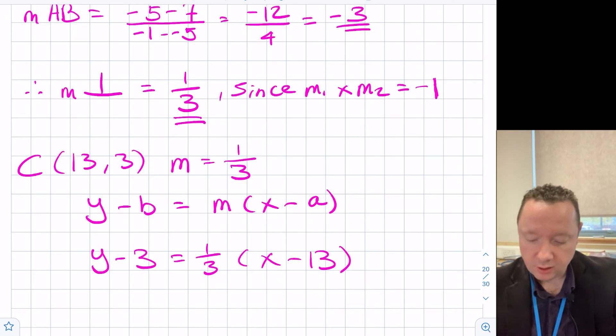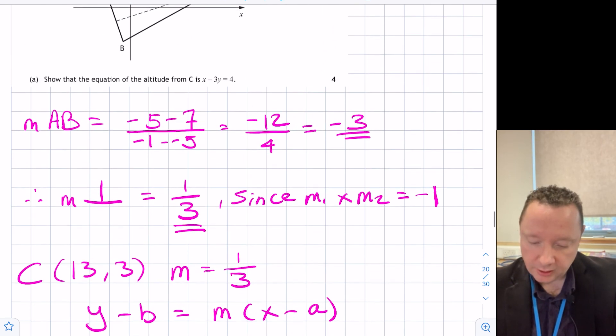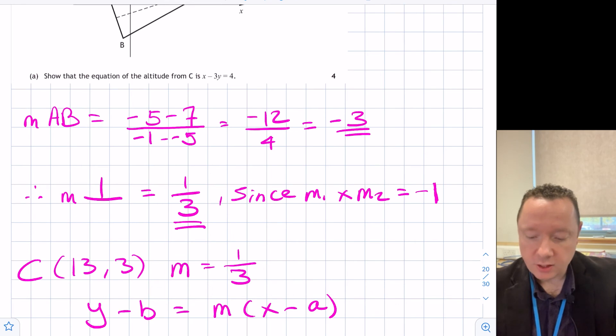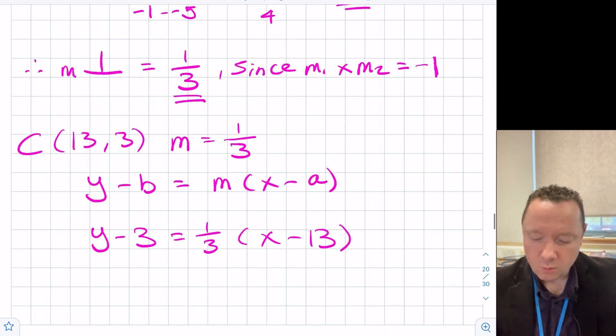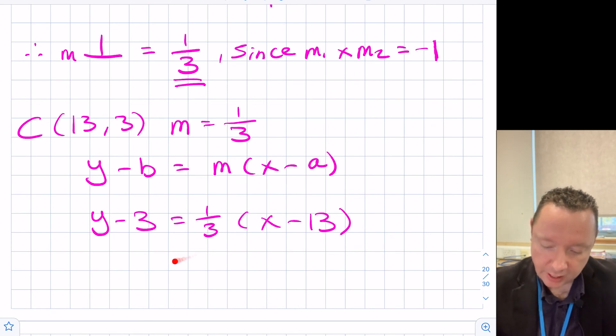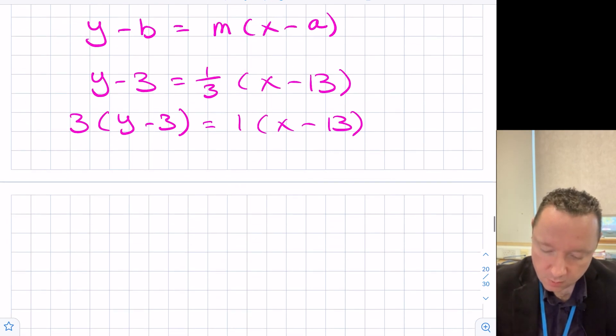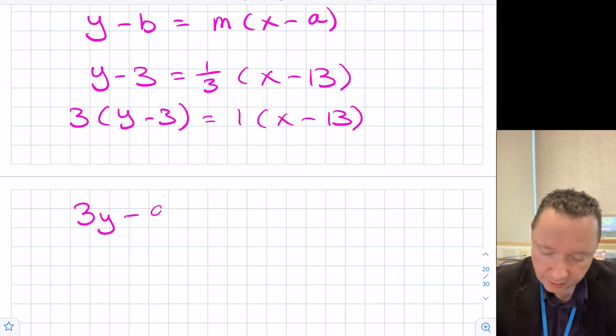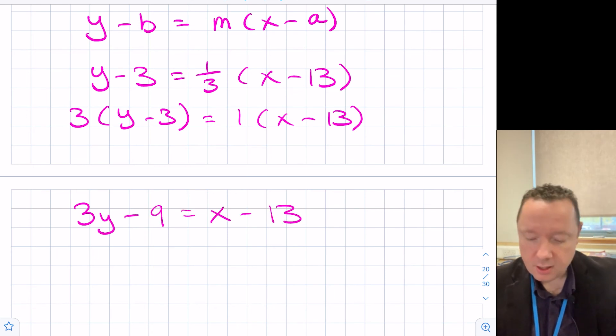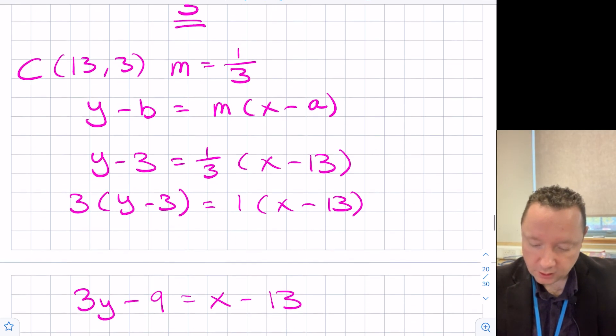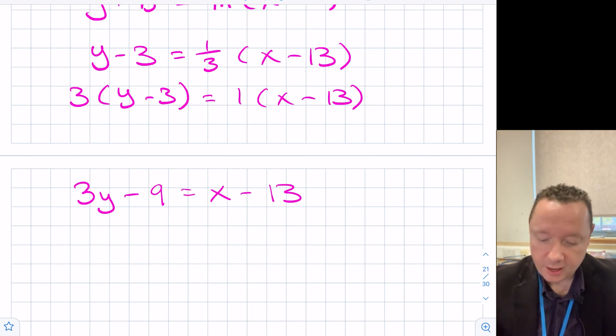Now, if we go back to the question, you'll see that it's not written in the form Y equals MX plus C, it's written as X minus 3Y equals 4. So we're eliminating fractions here, which we'd normally do anyway. So to eliminate a fraction, we can just times this whole side by 3, and that'll leave one on this side. So let's just do that. 3(Y minus 3), remember your bracket, equals 1(X minus 13). Multiplying out our bracket, we get 3Y minus 9 is X minus 13.